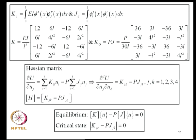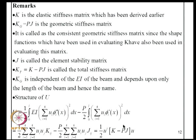To examine the critical condition, we construct the Hessian matrix with elements KJK - P·JJK. For equilibrium this equation must be satisfied, and for the critical state the determinant of the Hessian must be zero. K is the elastic stiffness matrix; KG = P·J is the consistent geometric stiffness matrix, so named because the same shape functions are used in evaluating both K and J. KT = K - P·J is the total stiffness matrix, which modifies the elastic stiffness by the geometric stiffness contribution.